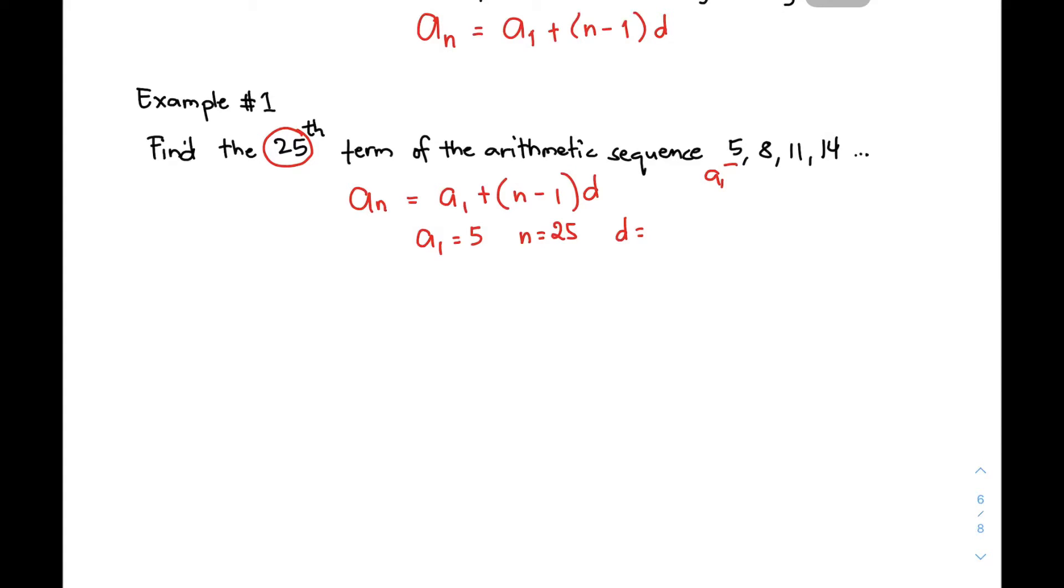Now, to find the common difference, the way to find the common difference is that you need to subtract the first term from the second term, which is 8 - 5. That will give you 3. Para masabi natin siyang common difference, kailangan, ang gawin mo muna, is kunin mo muna yung common differences ng iba't ibang klaseng terms, yung different pair of terms. Kasi hindi siya magiging common kung iisa lang naman.